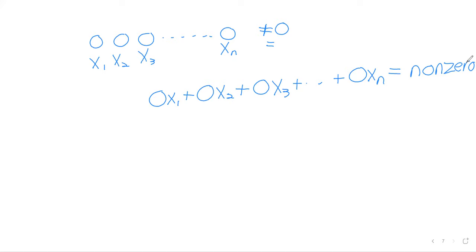When the last column is a pivot column, you get a row after elimination where all entries corresponding to variables are zero, but the entry corresponding to equality is something other than zero. When rewritten as an equation, you get the clearly false statement that a bunch of zeros added together equals something nonzero. Because that equality can never be true, the system has no solutions.